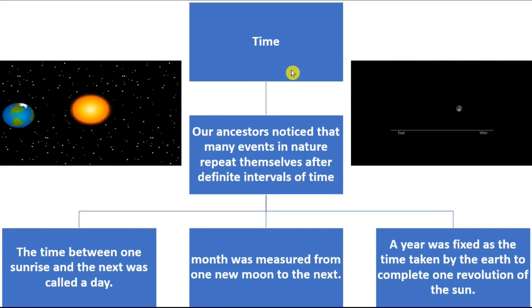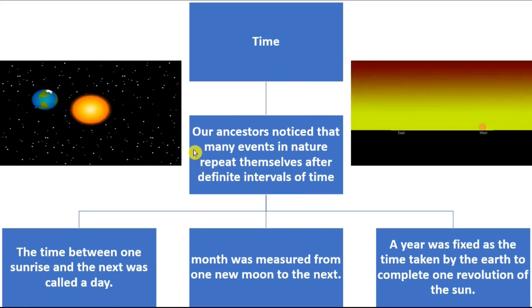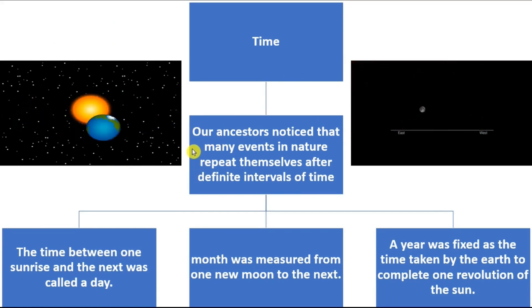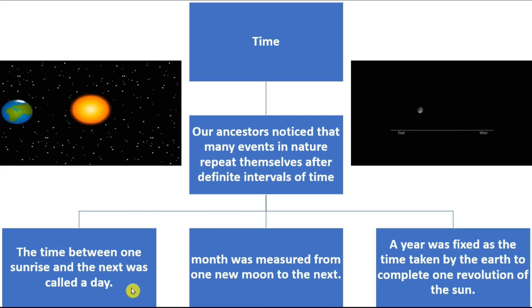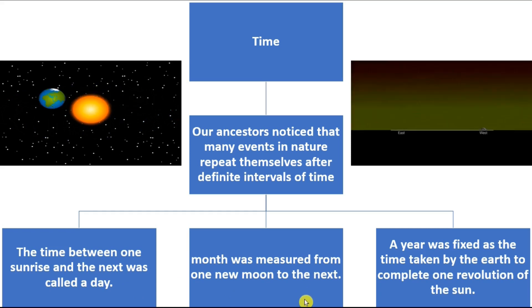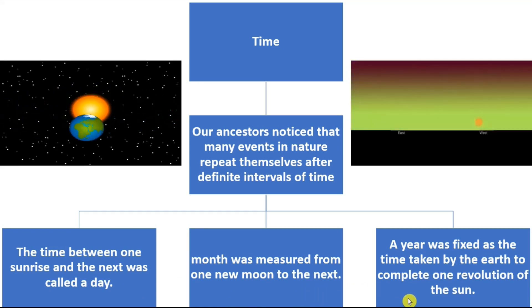Then we have the time. How the time was invented first? Our ancestors noticed that many events in nature repeated themselves after regular intervals of time. The examples are time between one sunrise and the next. It happens in 24 hours. It is called a day. Then month was measured from one new moon to the next new moon. The year is fixed as the time taken by the earth to complete one revolution of the sun.